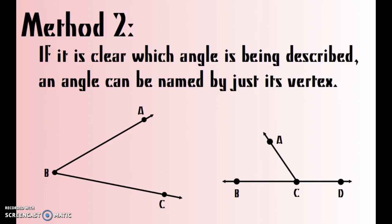I want you to look, so if I said this first angle here, if I wanted to call it angle B, that's completely fine, because you know exactly what angle I'm talking about. This has to be angle B, B is the vertex.